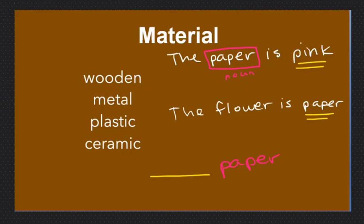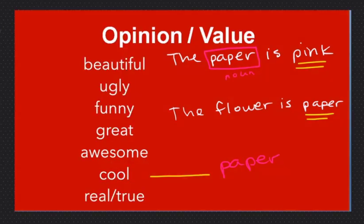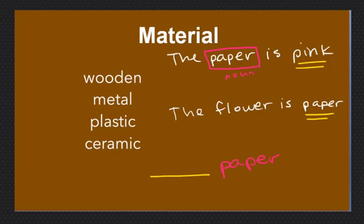Green and square are adjectives and paper is a noun. This is a crumpled paper — crumpled is the adjective. So in these examples, paper is the noun. Squared paper and square paper are both okay. Square paper refers to the shape.